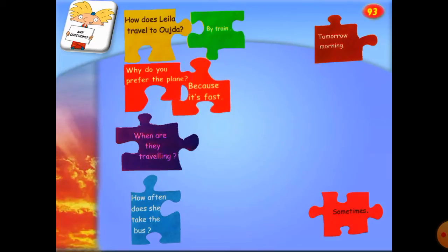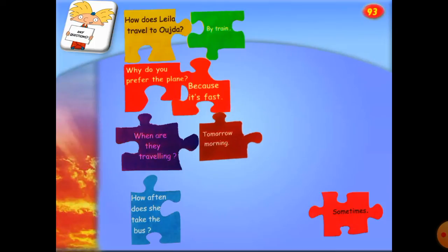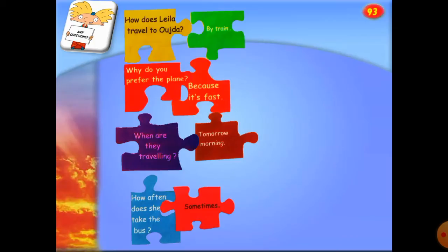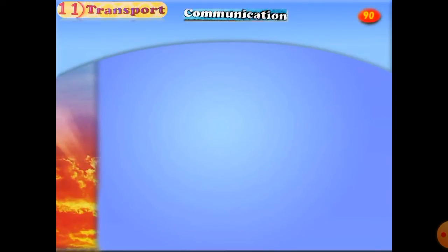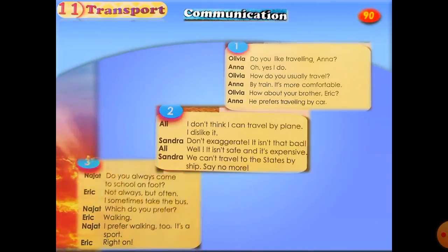Next question: why do you prefer the plane? Here we're talking about the reason — because it's fast. Next question: when are they traveling? Here we're talking about time — tomorrow morning. And the last one: how often does she take the bus? Here we're talking about frequency adverbs — sometimes, often — of course with an 'o', not with an 'a'.